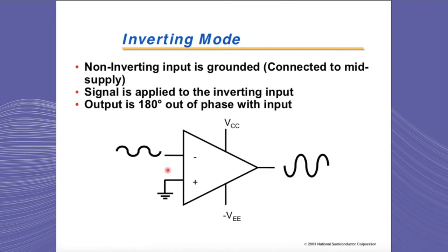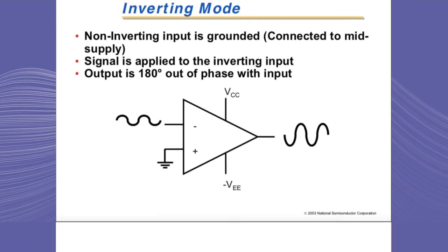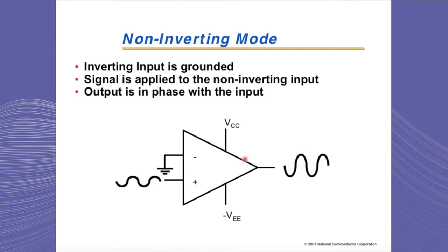In the inverting mode, the non-inverting input of the amplifier is grounded or connected to mid-supply. The input signal is applied to the negative input, and the output signal is completely out of phase with the input signal. In the non-inverting input mode, the signal is applied to the positive input of the amplifier while the negative input is grounded, and the output signal is completely in phase with the input signal.